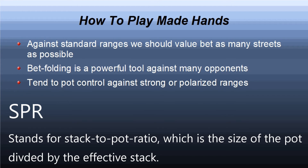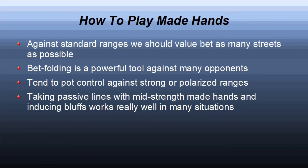When an opponent's range is strong, we tend to want pot control more often and try to get to showdown without building huge pots. Taking more passive lines such as checking back the flop is often warranted when it's hard to get value from worse hands. Instead, we benefit from keeping in the weaker parts of an opponent's range, which we can bluff-catch against on later streets.